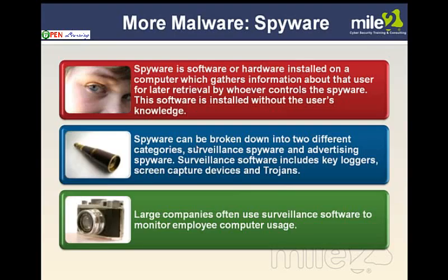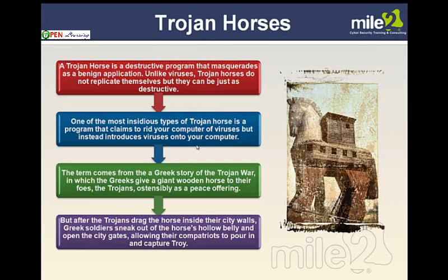Spyware: software or hardware installed on a computer that gathers information about you, and the bad guy could later retrieve this information without you knowing. Spyware can come in hardware, but many times it's in software. It can be broken down into surveillance spyware and advertising spyware. It's very important to keep our security software up to date and scan for these things. You could even have surveillance software to monitor employees' computer usage. Some people will even cover their webcams — because it has come out in the news that the FBI was able to turn on your webcam without the light coming on and you don't even know it.